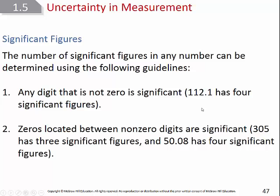The remaining rules deal with zeros. Rule 2: zeros located between non-zero digits — sandwiched in the middle — are always significant. For example, 305 has 3 significant figures (the zero counts), and 50.08 has 4 significant figures (both zeros are sandwiched and count).